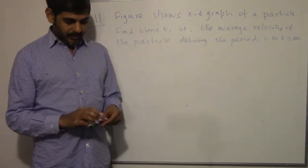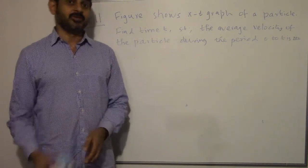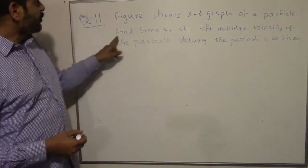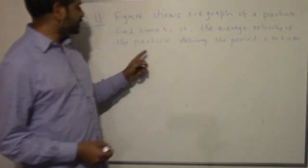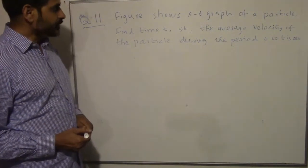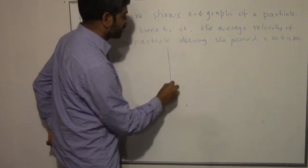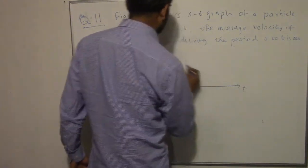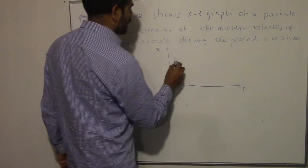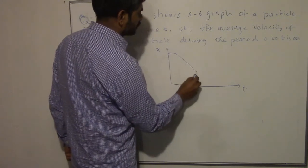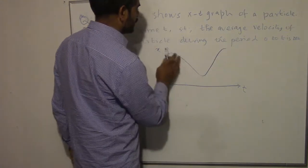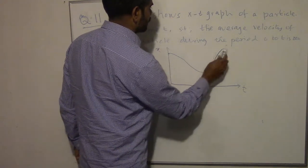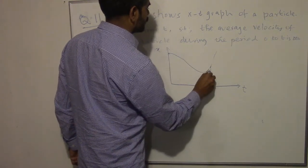The figure shows the variation of displacement on the x-axis with respect to time. Find time t such that the average velocity of the particle during the period 0 to t is zero. The graph looks something like this — time t on one axis, displacement x on the other. The curve goes down and then up, and it's not perfectly symmetrical; this part is a little steeper, just to show that the graph is irregular.